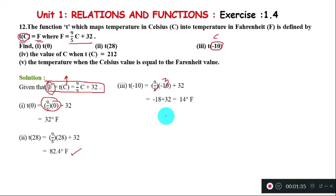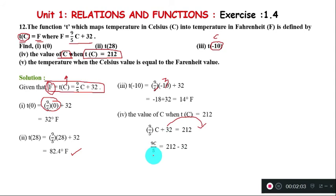Part (iv): Find the value of C when T(C) = 212. Set up the equation: 9/5 C + 32 = 212. Subtracting 32 from both sides: 9C/5 = 180.